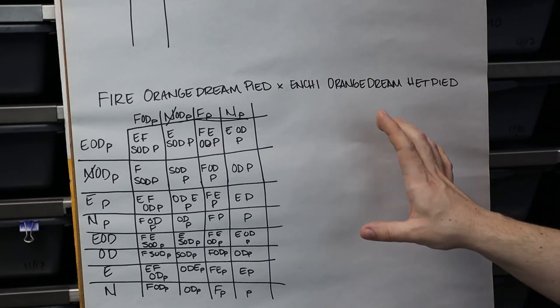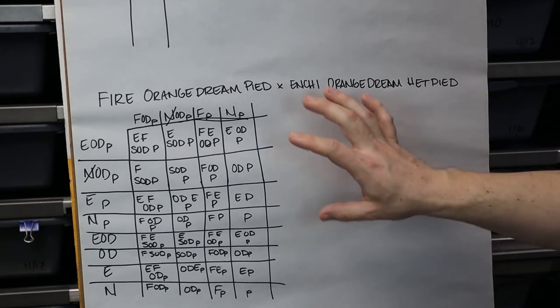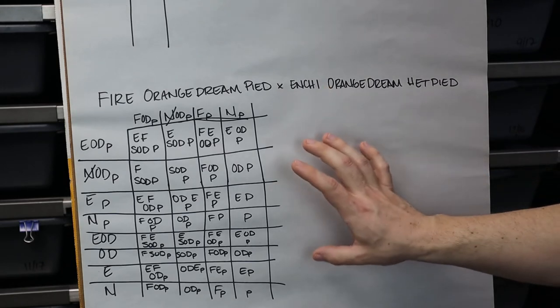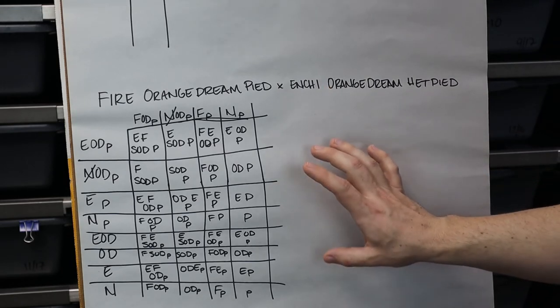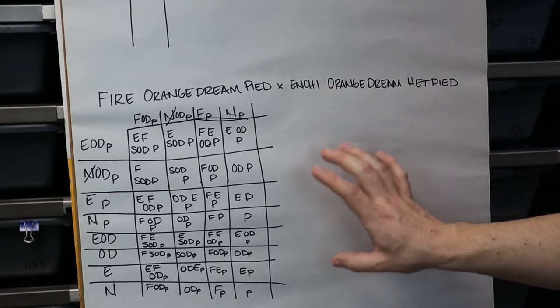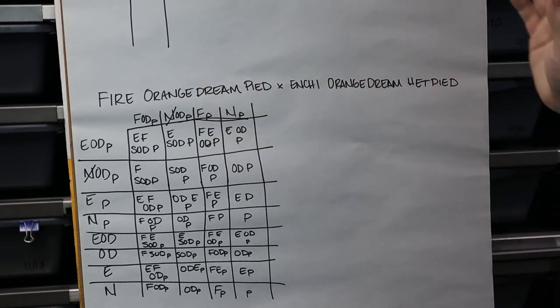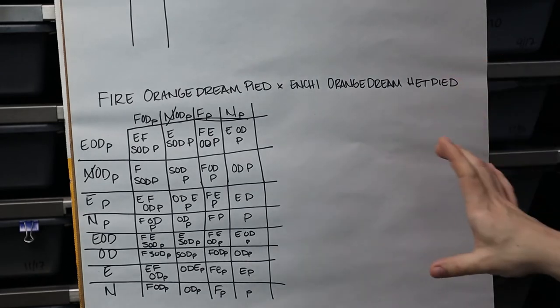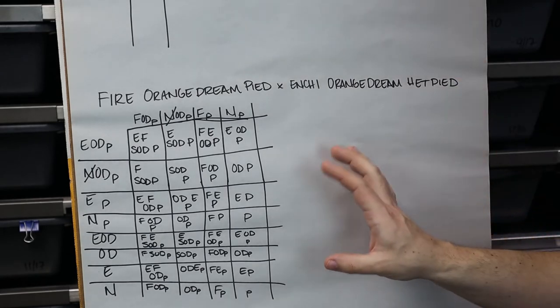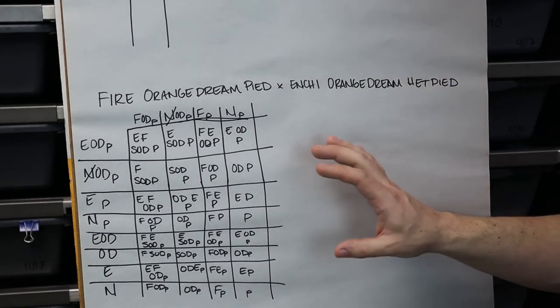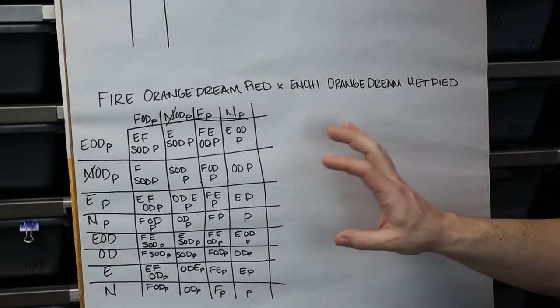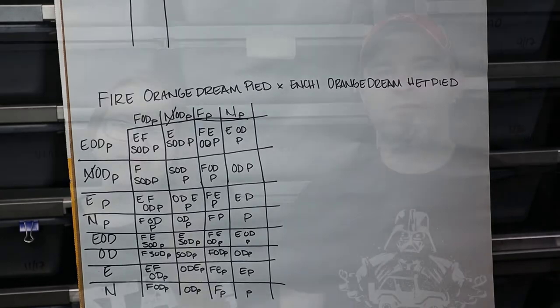I was going to do another block, but I think this block is a good example of how you build a Punnett square using codoms, recessives, and het recessives. So I think that's going to wrap this up — we'll come right back to you for closing thoughts. That's going to wrap it up on the genetics series.